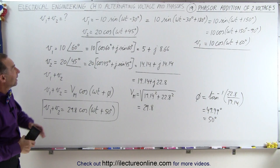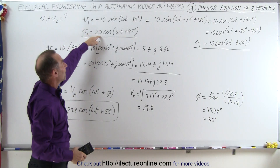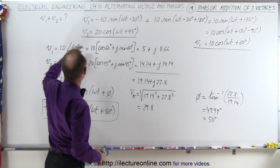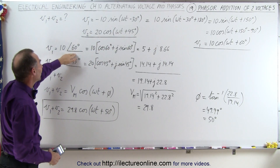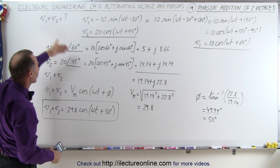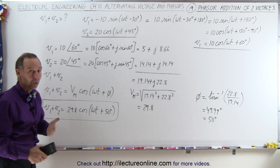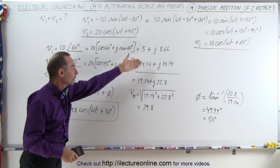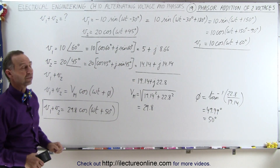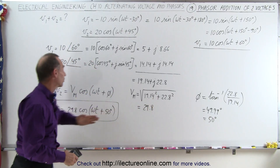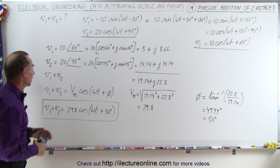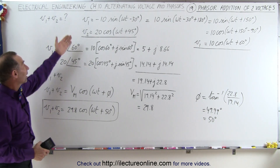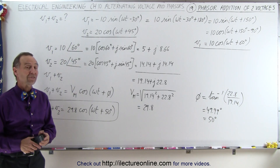So again, take the voltages in the time domain and write them in the form of cosines. Once you've done that, you can easily convert them to the magnitude and phase angle — now we're in the phasor domain, or frequency domain. Then convert to real and imaginary parts, add the real parts together, add the imaginary parts together, and then reconvert back to the time domain so they have the same representation as what you started with. That's how it's done.